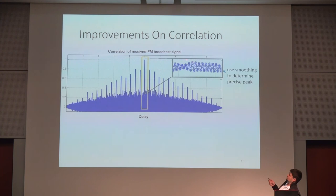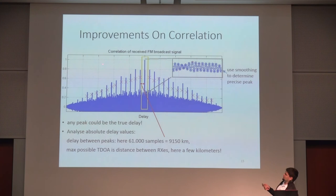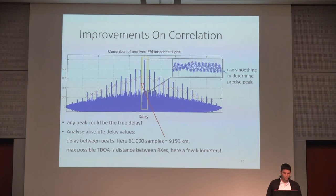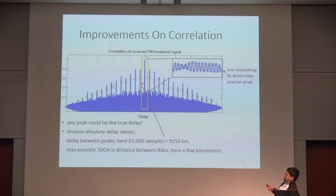What can we do about a noisy correlation? First, we can apply smoothing using a moving average to smooth out the noise — very easy. For the multiple distinct peaks, any one could be the true delay, but if you compare two peaks, the delay between them corresponds to a distance of over 9,000 kilometers. Since the maximum possible TDOA distance is just the distance between receivers — only a few kilometers in my case — it's easy to see that the peak near zero delay is the correct one and all others can be discarded.